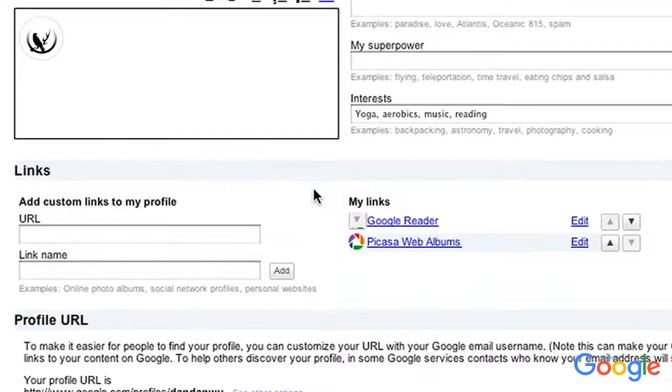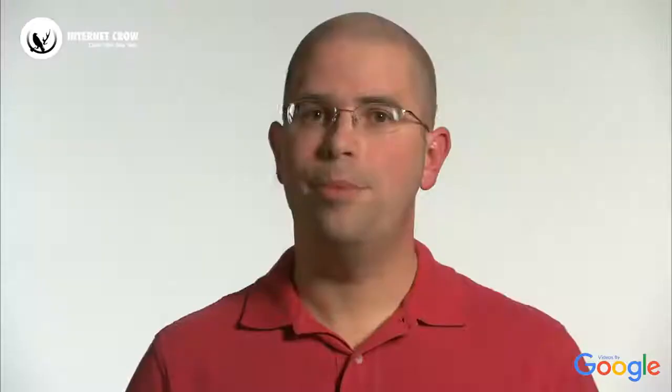For example, you can add a link to your Twitter account, your FriendFeed account, your blog, or your Picasa albums.